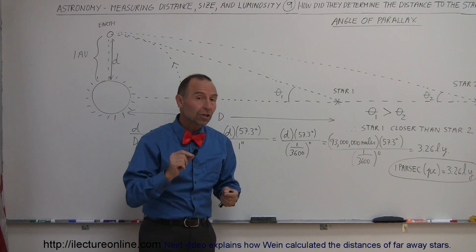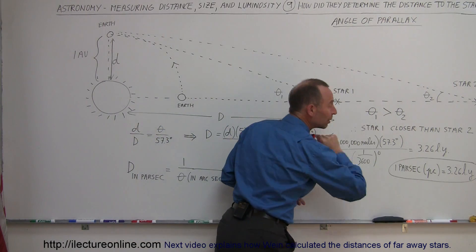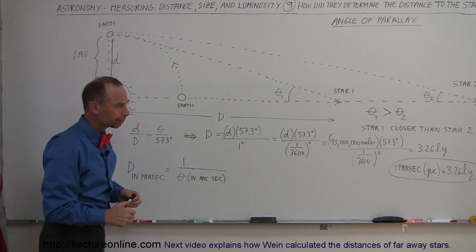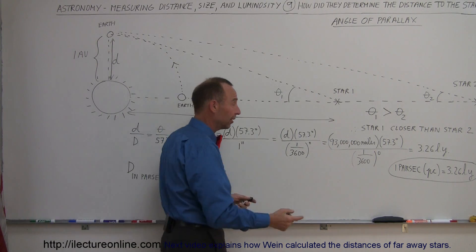And so there came the unit, then, that if the angle is one arc second, the distance would be 3.26 light years. And so they came up with this new distance unit called the parsec. Now, where does parsec come from?